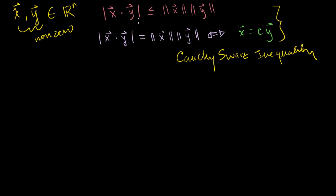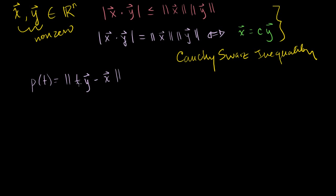Let's prove it, because you can't take something like this just at face value. Let me construct a somewhat artificial function — a function of some scalar t. Let me define p(t) to be equal to the length of the vector ty minus the vector x, squared. This is going to be a vector, and we're squaring its length.